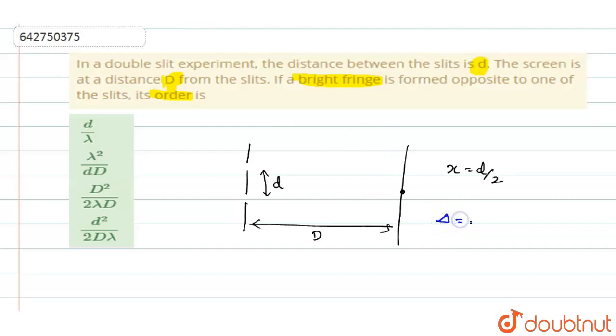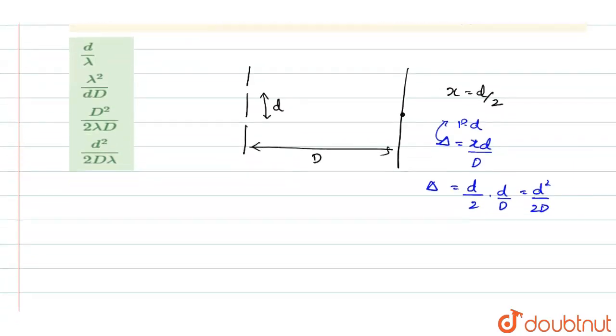So, path difference will be equal to X D by D. Delta is equal to X D by D, where delta is nothing but the path difference. So, path difference is X D by D. So, X when you are substituted here, see, delta will be equal to D by 2 into D by D. So, you get it as D square by 2D. So, this is the path difference value.